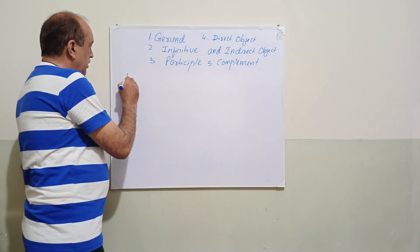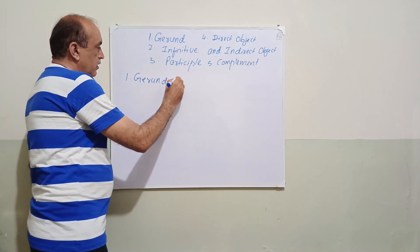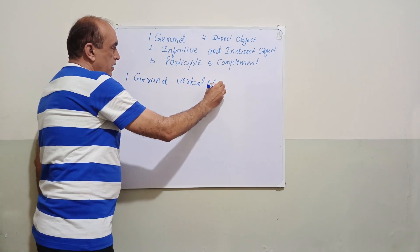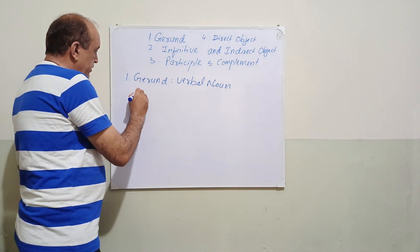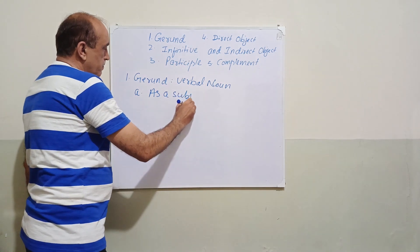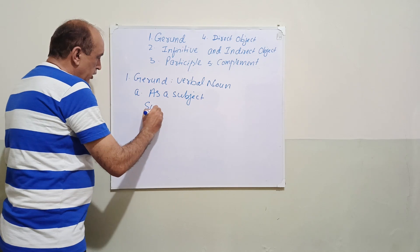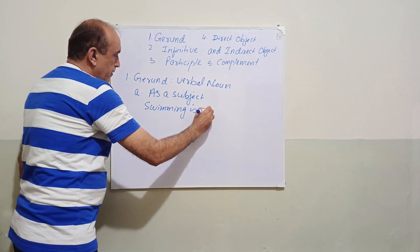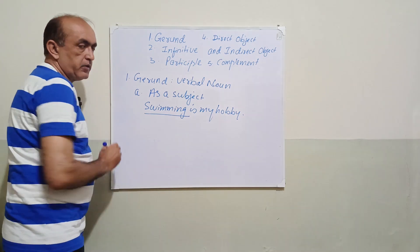Gerund. Basically, gerund is a verbal noun. It is called a verbal noun. It is used as a subject. In the first place it is used as a subject. For example, swimming is my hobby. Now swimming is gerund.